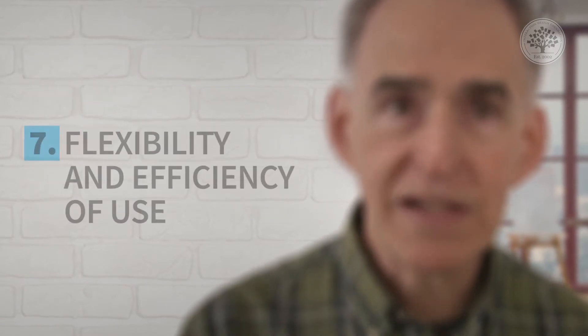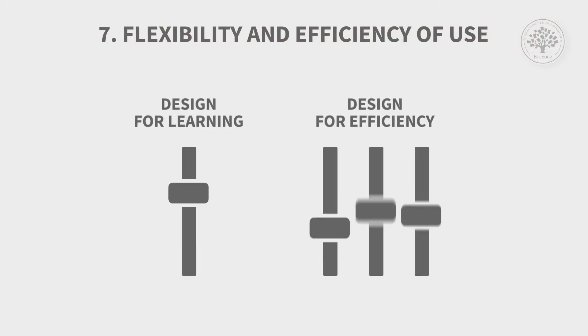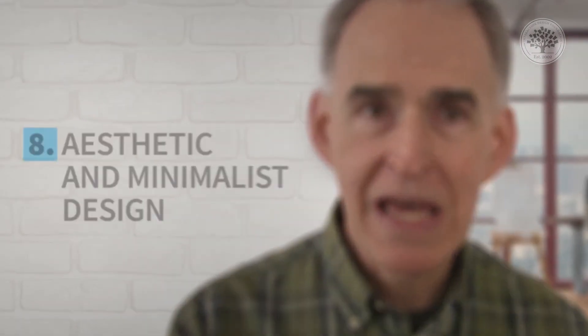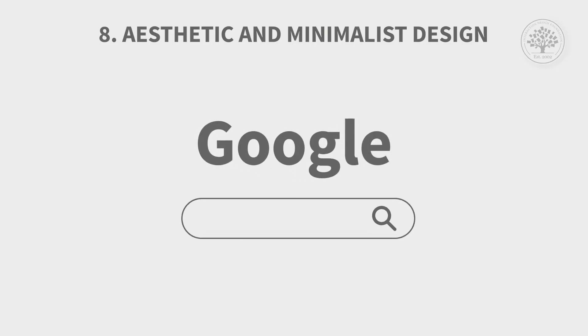Flexibility and efficiency of use involves a trade-off between design for learning and design for efficiency. Making things more flexible and efficient often makes them harder to use — that's where the tension in design comes in. Aesthetic and minimalist design means people like websites that look attractive and that they trust visually. It's important not to put too much in front of users at once, which is what we mean by minimalist design. We should also help users recognize, diagnose, and recover from errors.